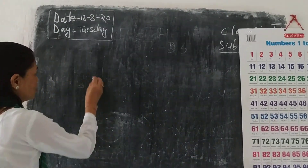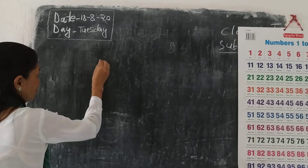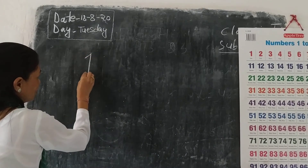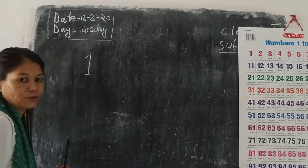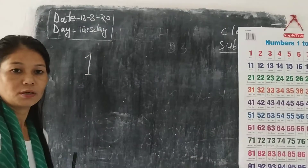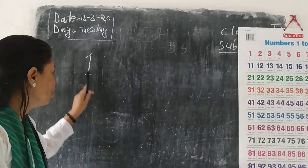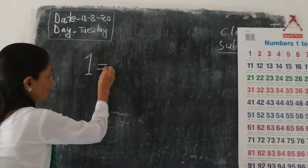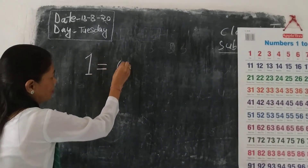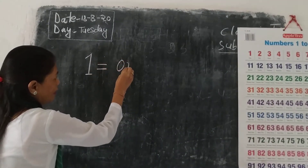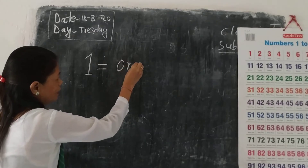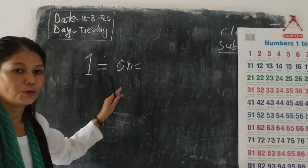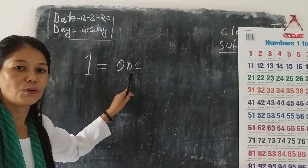So first, what is this? 1. Okay. Spell it: O-N-E. 1.